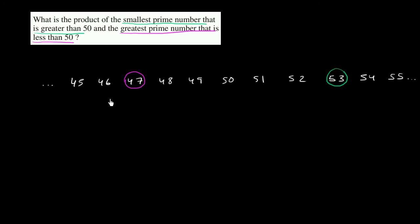So really they want us to take the product of 53 and 47. So 53 times 47 and we are going to get 7 times 3 is 21. 7 times 5 is 35 plus 2 is 37.